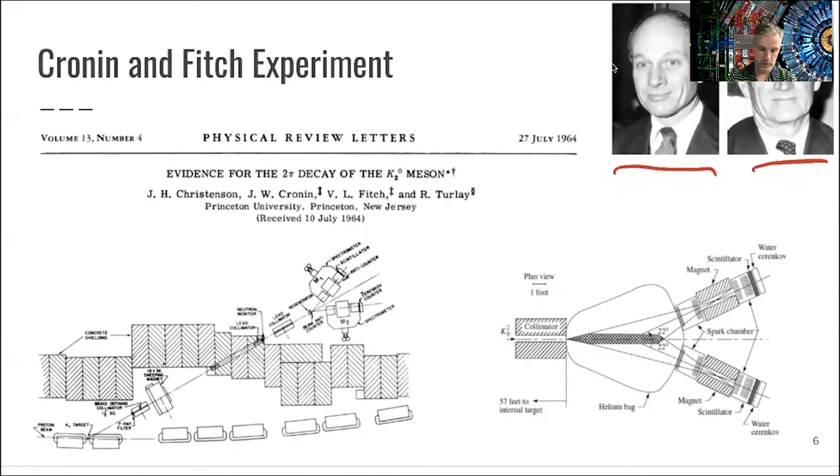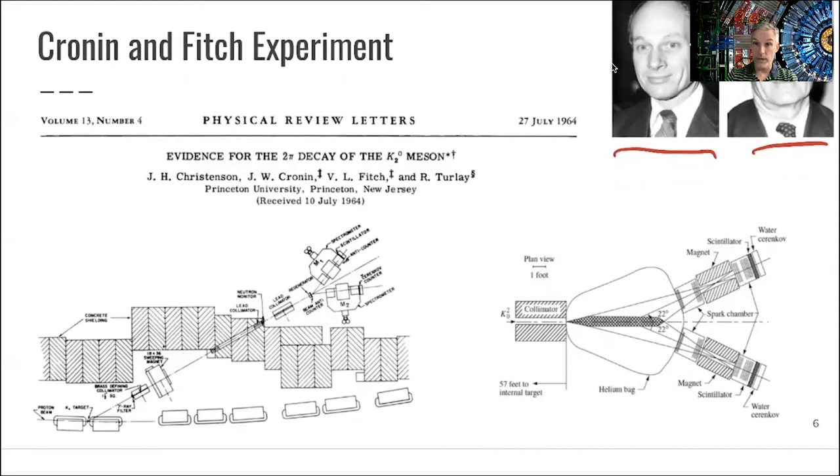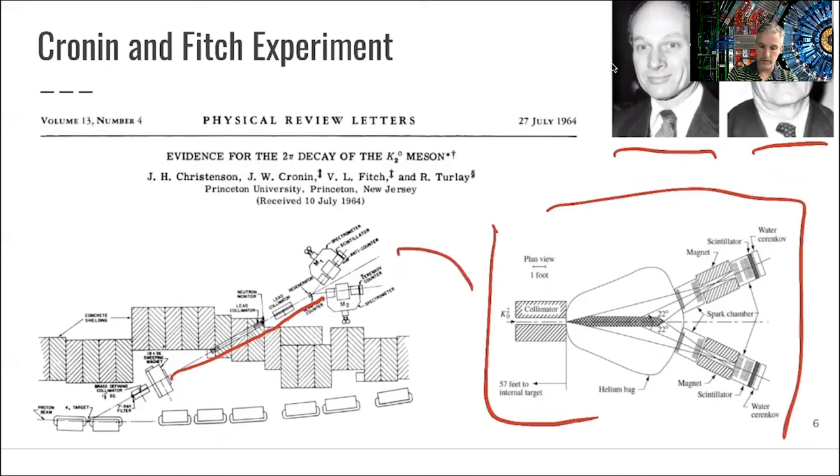Here's the experiment. You take protons, dump them into a beam. You try to, with this magnet, filter out the neutral component, get rid of all photons, and then let this beam decay. And look in the spectrometer for decays of two photons. Here's a bigger picture of the same spectrometer, because this is a blow-up view of this.